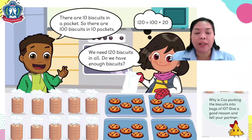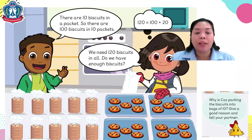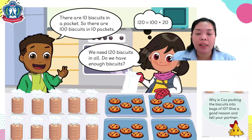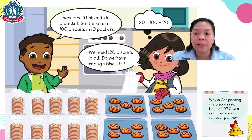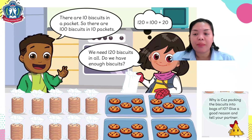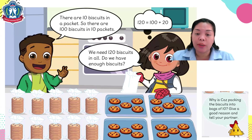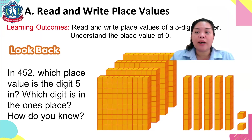I have here a picture. The boy Eddie said there are 10 biscuits in a packet, so there are 100 biscuits in 10 pockets. The girl Kaz answered that we need 120 biscuits in all. Do we have enough biscuits? Why is Kaz packing the biscuits into bags of 10? If you know the answer, you can share that during our class.